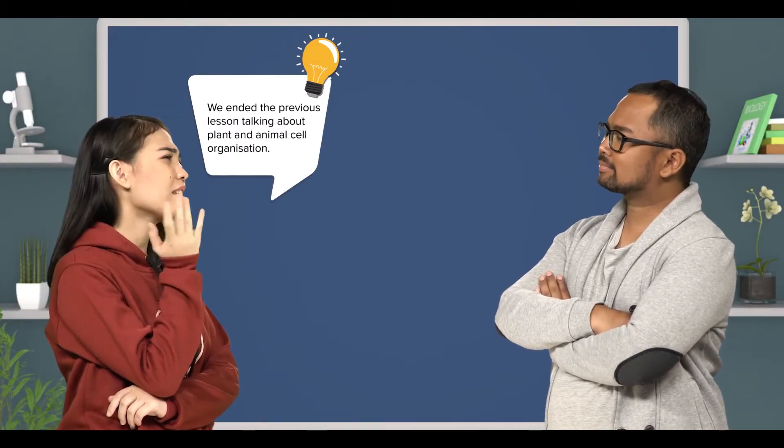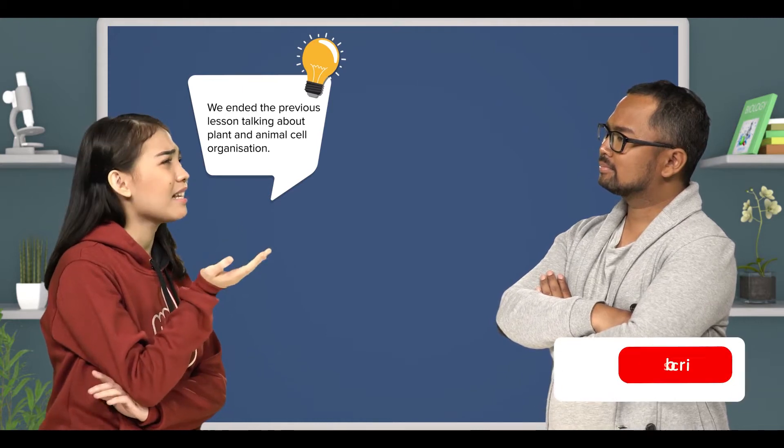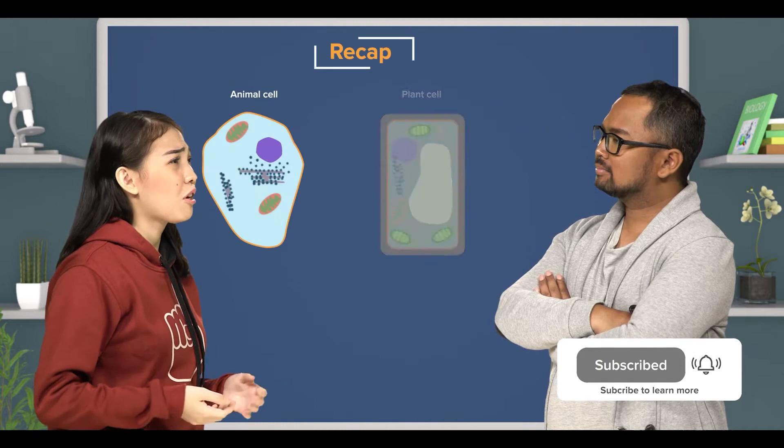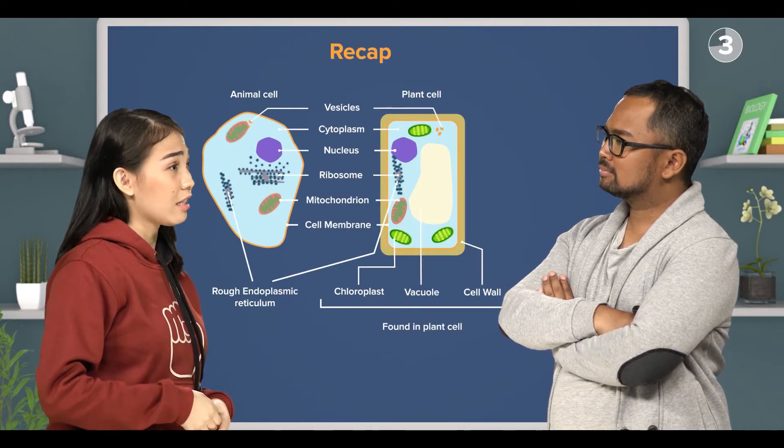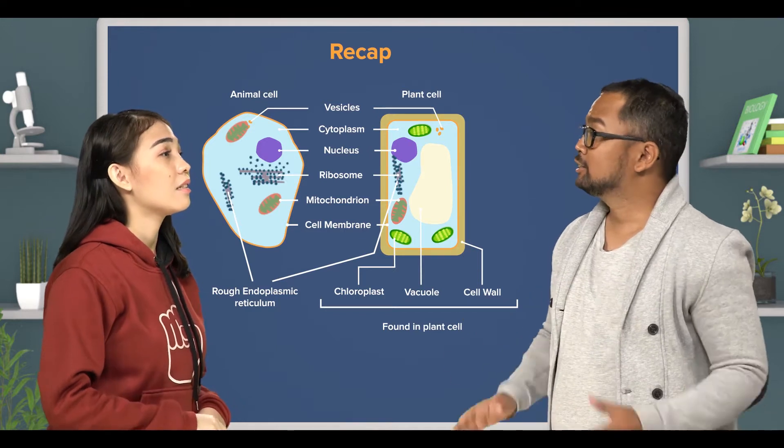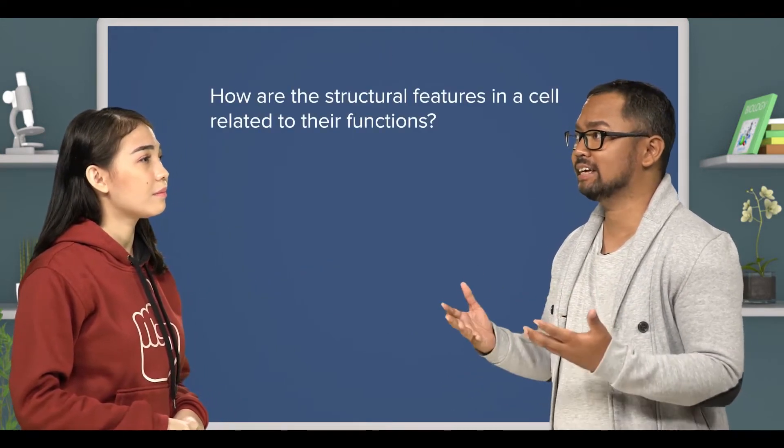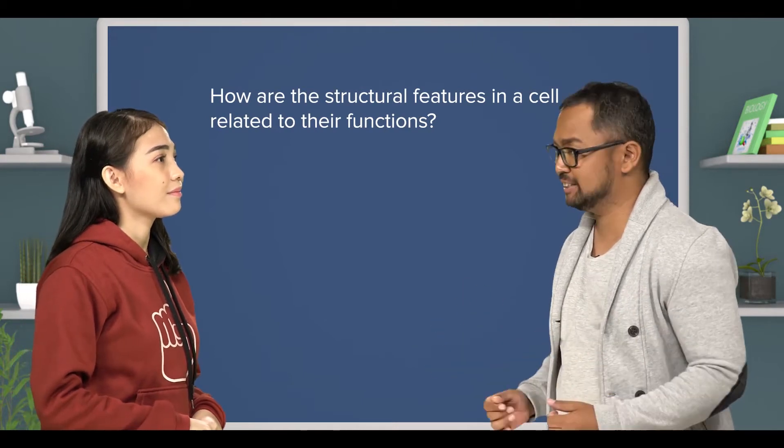Teacher, we ended the previous lesson talking about plant and animal cell organization. We'd also talked about the structure of its organelles. That's right. Today, we will talk about how the structural features in a cell are related to their functions.